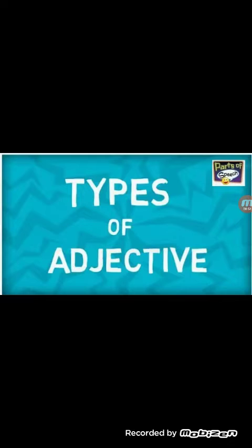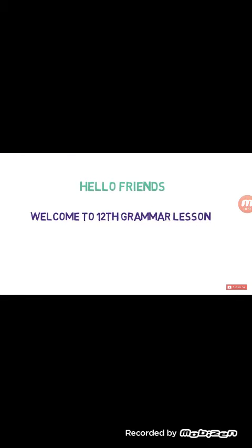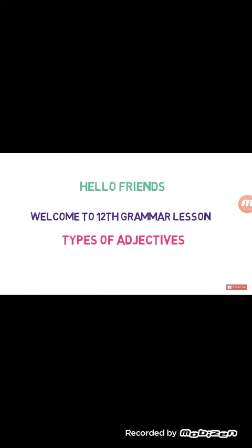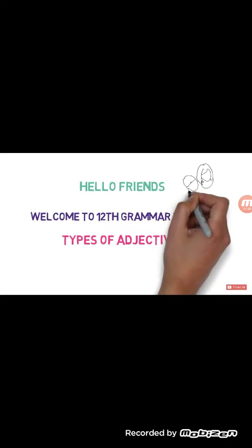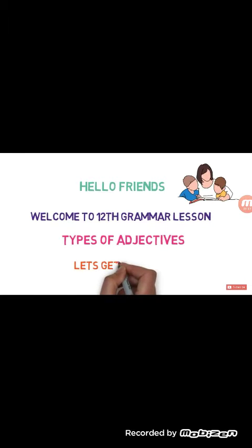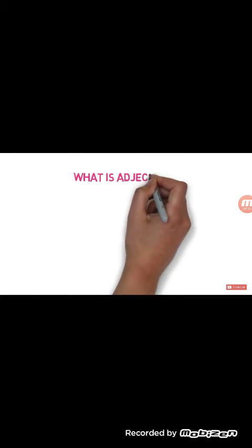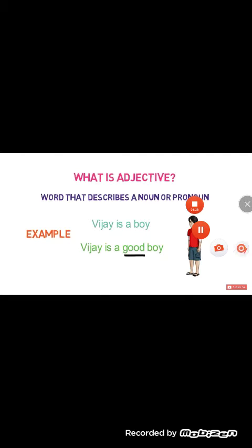In this lesson we will discuss about different types of adjectives. To get the most out of this video, please watch it till the end — I am sure you will learn a lot about adjectives. So let's get started. An adjective is a describing word. Now we will move to the six types of adjectives.